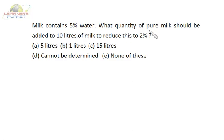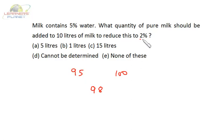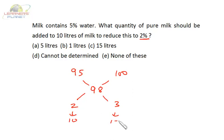Milk contains 5% water. What quantity of pure milk should be added to 10 liters of milk to reduce the water content to 2%? The existing milk has 5% water, so its purity is 95%. We add 100% pure milk, and we want the new milk to be 98% pure (2% water). The differences are 3 and 2, giving a ratio of 2 is to 3. For every 2 parts of existing milk, 3 parts of pure milk are required. For 10 liters, we need to add 15 liters of pure milk.